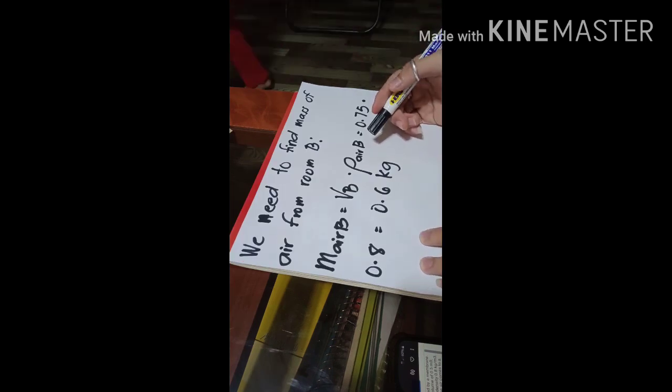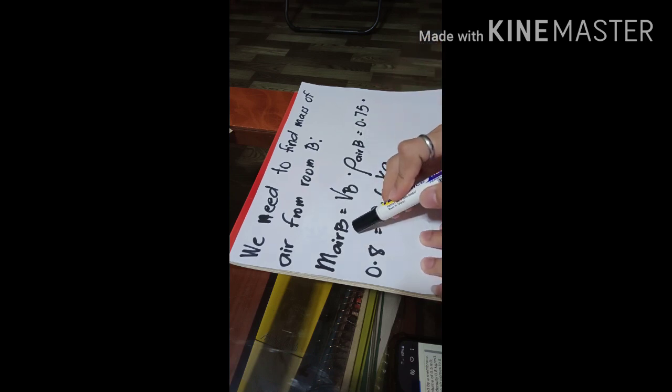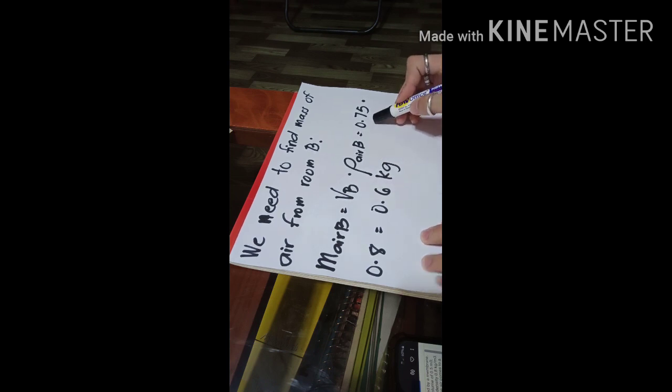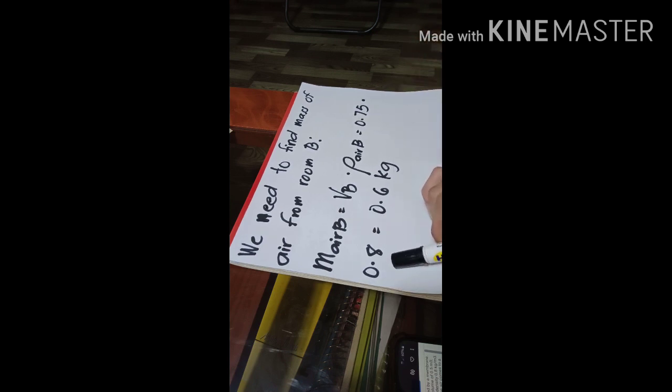And here's the solution. First, we need to find mass of air from B. M sub air B equals V sub B times density of air B equals 0.75 times 0.8 equals 0.6 kilograms.